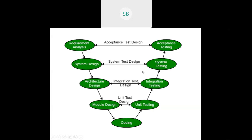The V model has three phases. The verification phase includes: requirement analysis, system design, architecture design, and module design. The validation phase includes: acceptance testing, system testing, integration testing, and unit testing. The third phase is the coding phase.